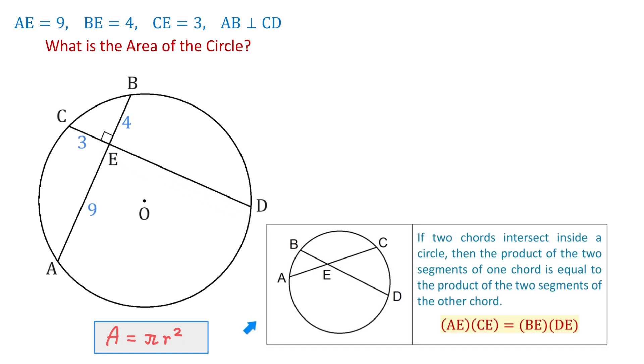Now, here is what we know about intersecting chords. If two chords intersect inside a circle, then the product of the two segments of one chord is equal to the product of the two segments of the other chord. And that is AE times CE equals BE times DE.